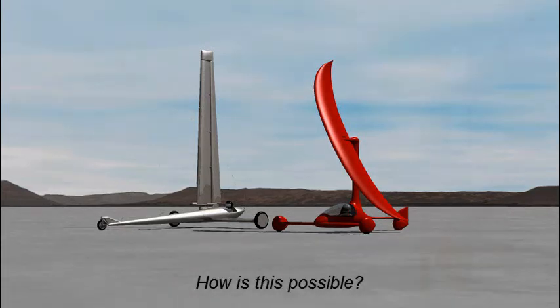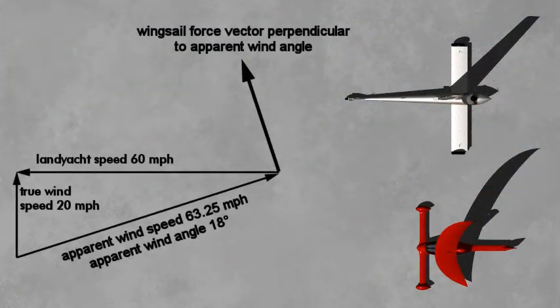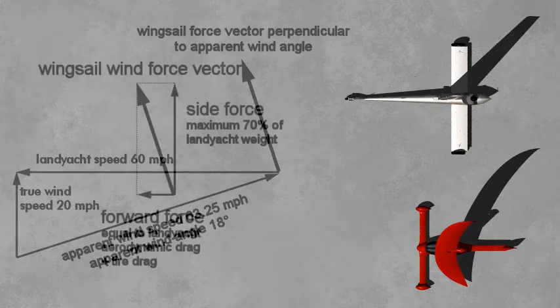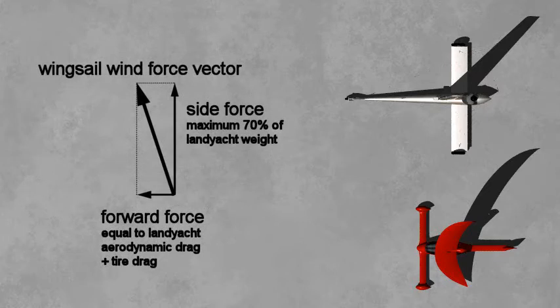When sailing west at 60 miles per hour in a 20 mile per hour south wind, the land yacht encounters an apparent wind of 63.25 miles per hour at an 18 degree angle. The wind sail force vector is perpendicular to this apparent wind angle. The force vector is inclined toward the land yacht's direction of motion. At speed, this forward force overcomes the land yacht's aerodynamic drag and tire rolling resistance. This is how a land yacht is able to sail faster than the wind.